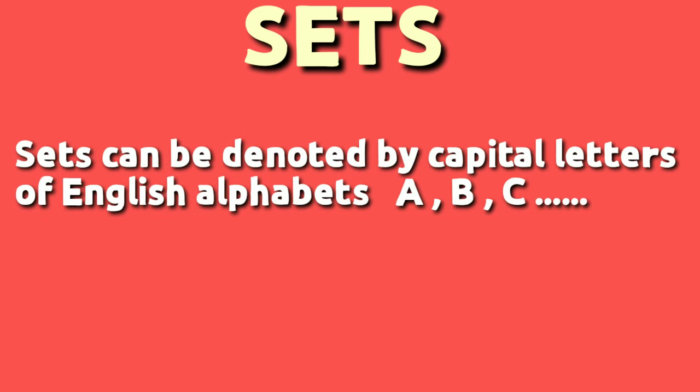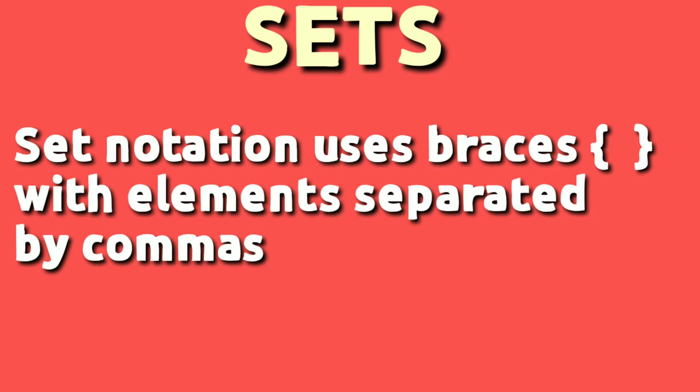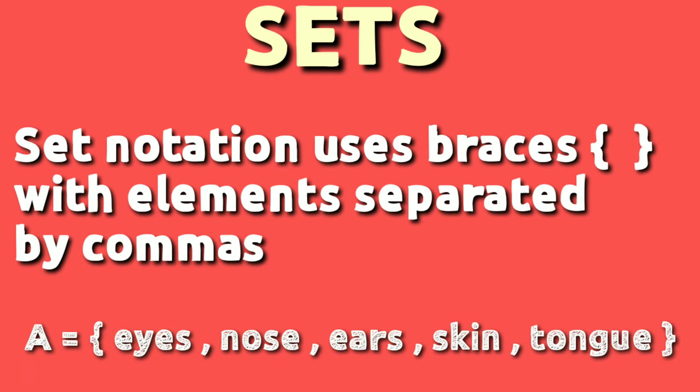Sets can be denoted by capital letters of English alphabets like A, B, C. Set notation uses braces, open and closed curly braces with elements separated by commas. A is a set given here. A is a set of sensory organs.